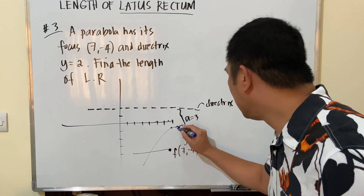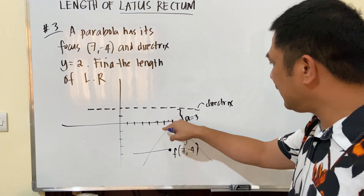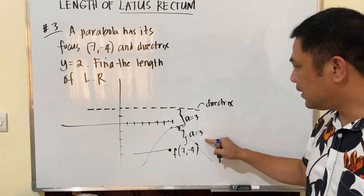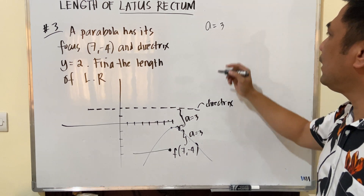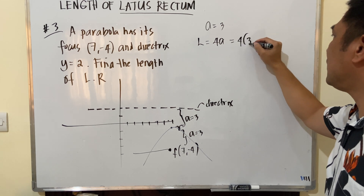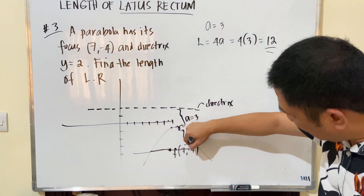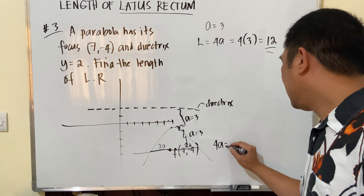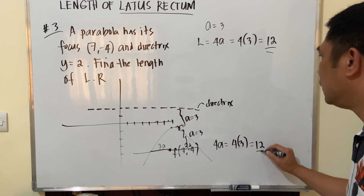The parabola is opening downward since the directrix is above the focus. With a = 3, the length of the latus rectum = 4a = 4 × 3 = 12. Each half of the latus rectum is 2a = 6, giving a total of 12.